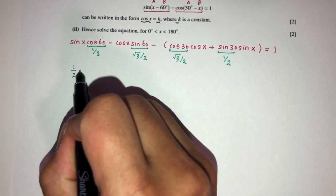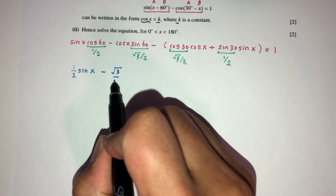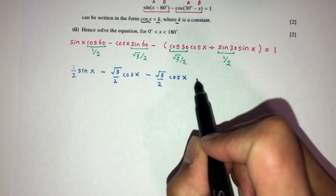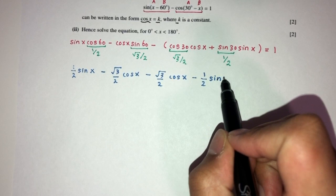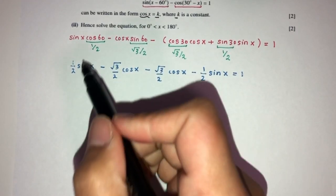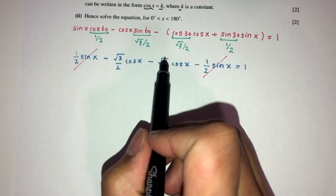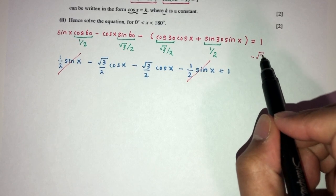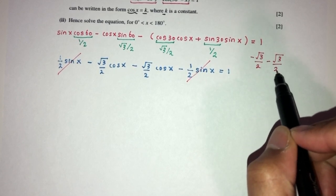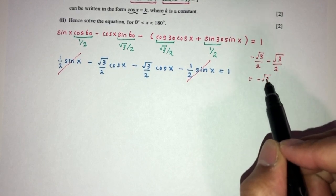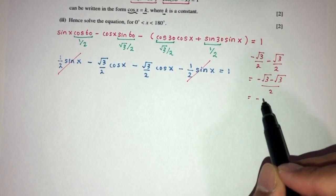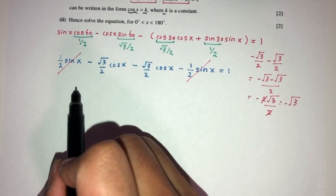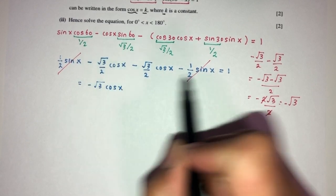After substituting, we get: (1/2)sin x − (√3/2)cos x, then minus [(√3/2)cos x + (1/2)sin x] = 1. The sin x terms cancel out. For the cos x terms: −√3/2 − √3/2 = −2√3/2 = −√3. So we are left with −√3 · cos x = 1.